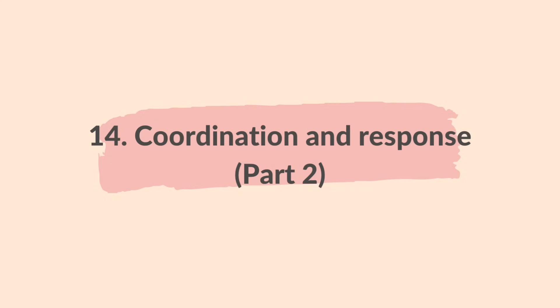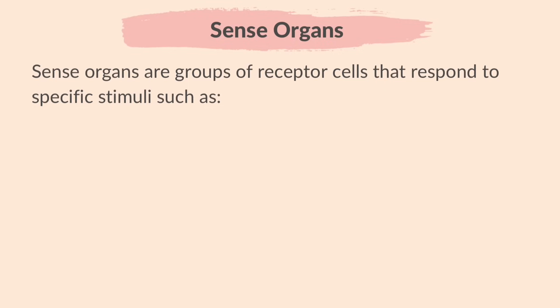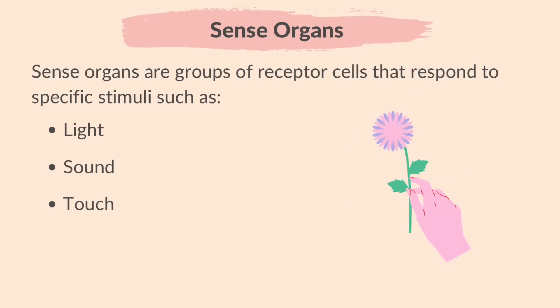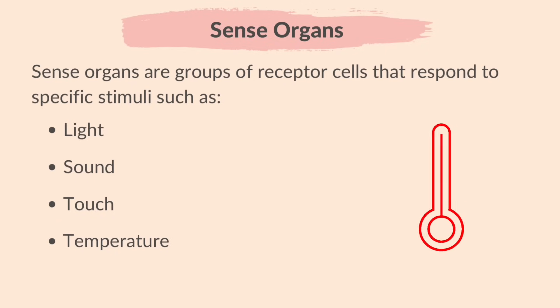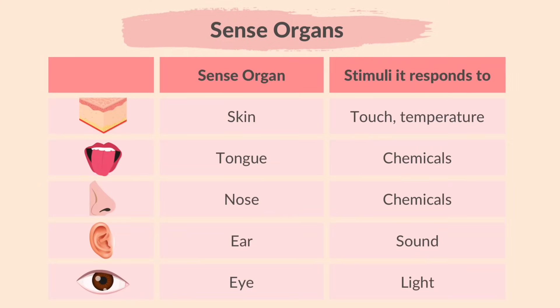In this video you are going to learn Part 2 of Topic 14: Coordination and Response. In the previous video we learned that a stimulus is any change in the environment that can be detected by structures called receptors. Sense organs are groups of receptor cells that respond to specific stimuli such as light, sound, touch, temperature, and chemicals. The skin responds to touch and temperature, the tongue responds to chemicals in food and drink, the nose responds to chemicals in the air, and the ear responds to sound.